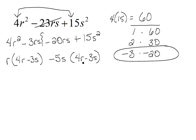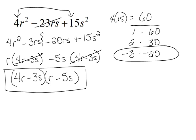Now we have a common factor of 4r - 3s. When we factor that out of both of these, in the first term we're left with an r and in the second term we're left with a -5s. So this is the factorization.